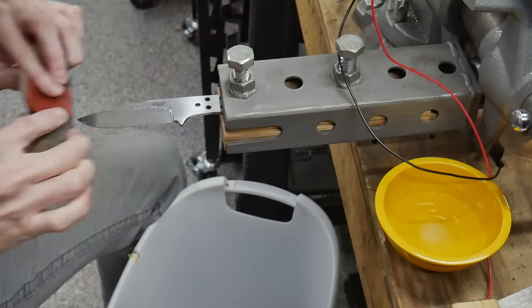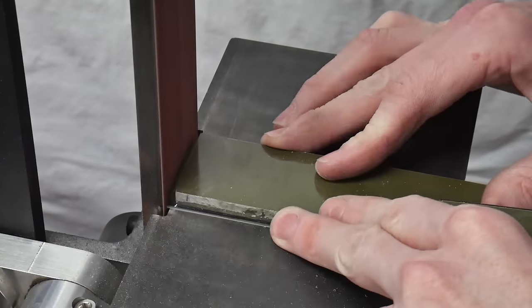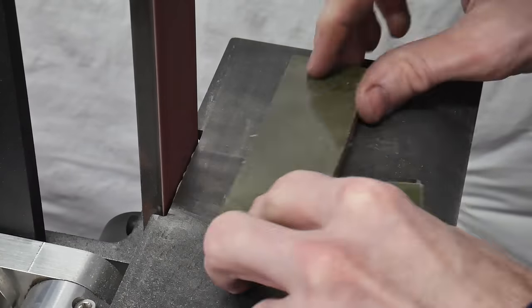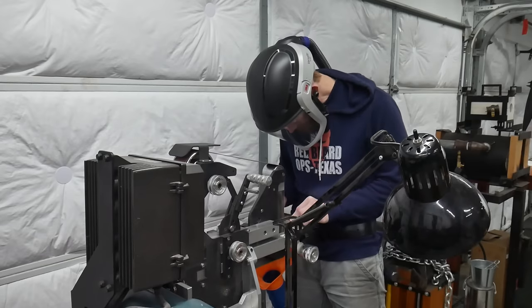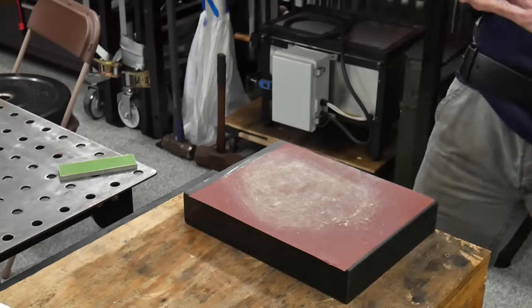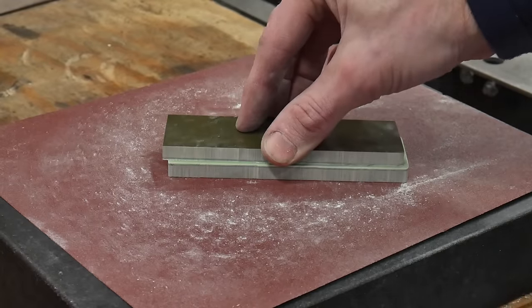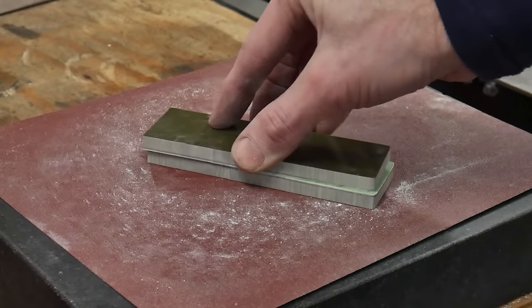At this point, the blade is essentially complete and we can move on to the handle. It's important to protect the blade from here on, so I normally cover it with WD-40 and wrap it with a paper towel and some tape. The handle scales need to be flat where they mate up with the tang in order to maximize strength and to be visually appealing without gaps. To get them super flat, I use a surface plate and a sheet of 120 grit sandpaper.